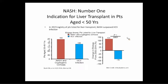A study done by my co-fellow at VCU showed that in patients less than 50 years old, looking at transplant indications in the 2015 registry, NASH and cryptogenic combined are already beating Hep C. Cryptogenic is a very small portion of transplants. It's already here.